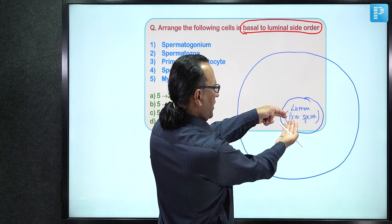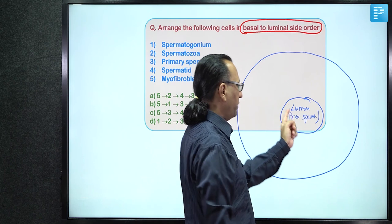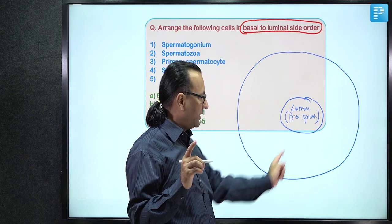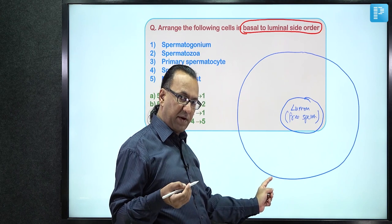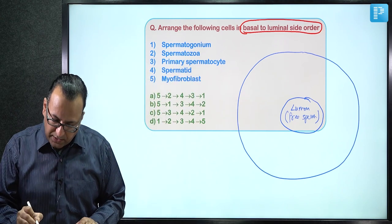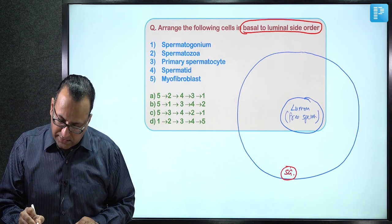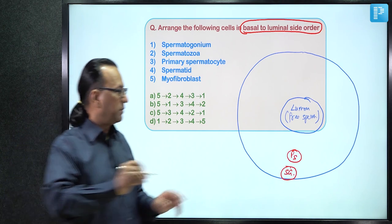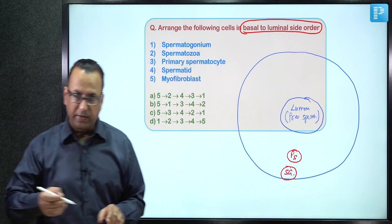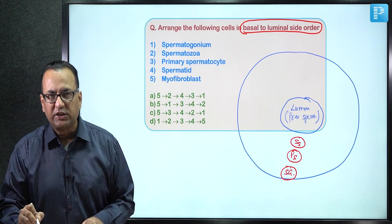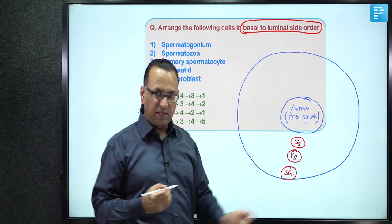On the basement membrane of the seminiferous tubule, the first cell is the spermatogonium, which undergoes mitosis to produce the primary spermatocyte. The primary spermatocyte enters meiosis I to give the secondary spermatocyte. Secondary spermatocytes are rarely seen histologically because they very quickly enter meiosis II to form spermatids, which then become free spermatozoa in the lumen.